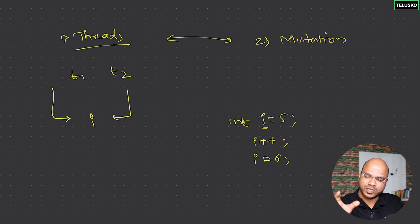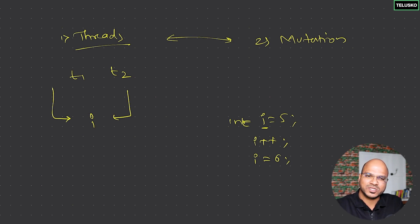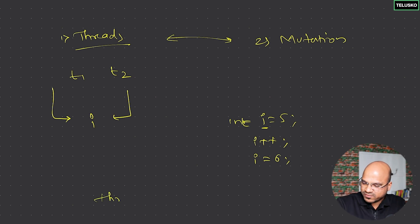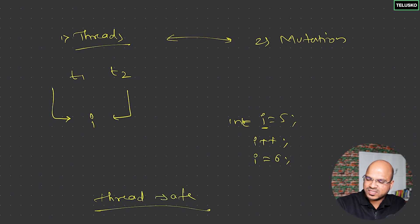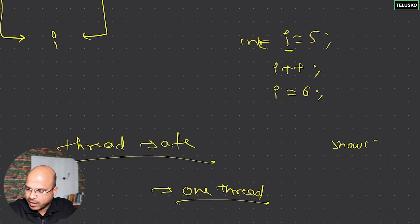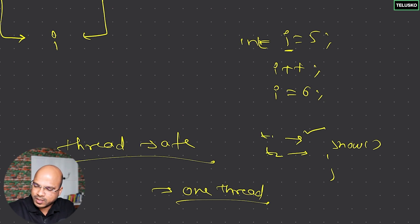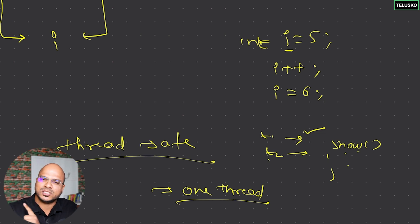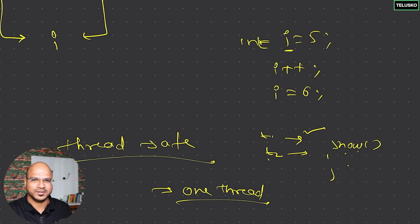When working with threads, always try to make sure you work with immutable data. Or if you have a method that does mutation, make it thread-safe. Thread-safe simply means that only one thread can work with that at one point. For example, if you have a method called 'show' and both t1 and t2 will call it, only one of them can get into 'show' at a time — if t1 is executing show, t2 cannot. That's the restriction we can add.